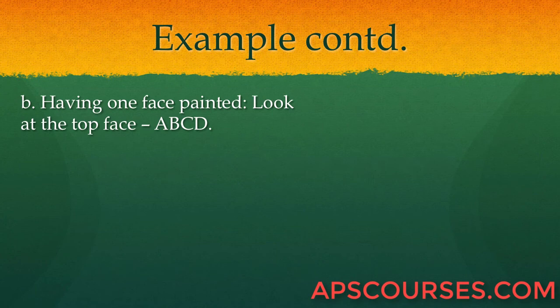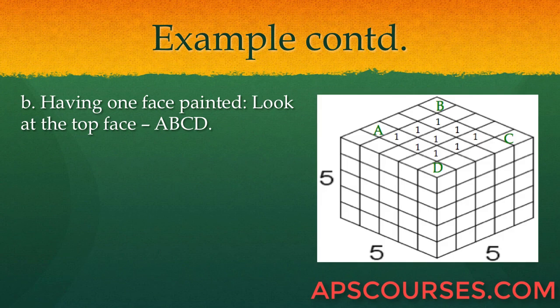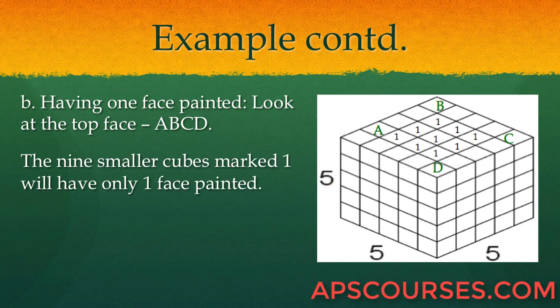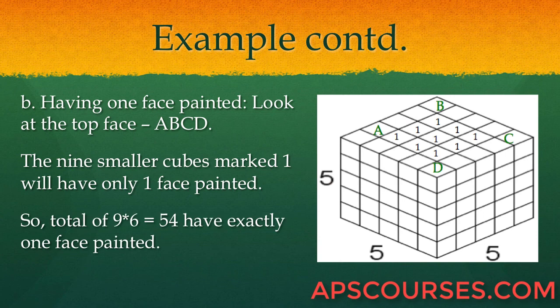The second part: cubes having one face painted. Looking at the top face, there are 9 small cubes which have only one face painted — these 1×1×1 cubes are the interior face cubes, indicated by the number 1. Since the same applies to all 6 faces, a total of 9×6 = 54 cubes have exactly one face painted.